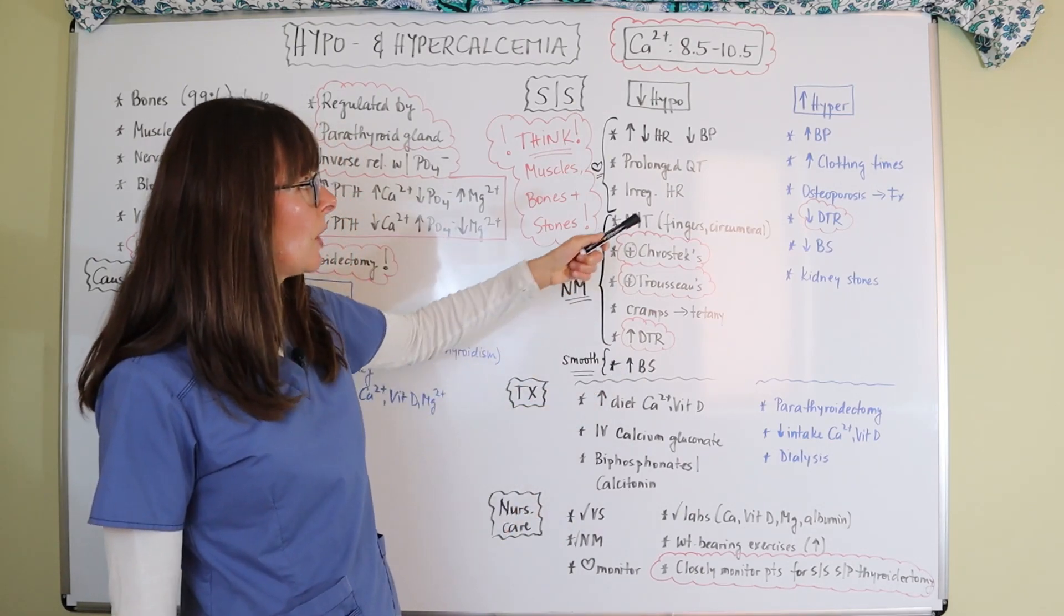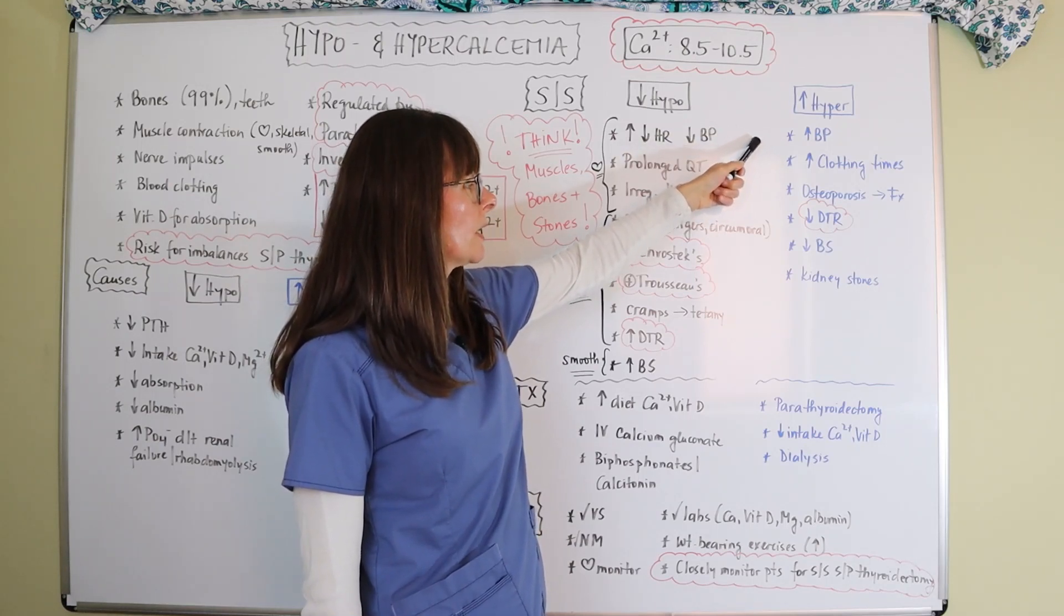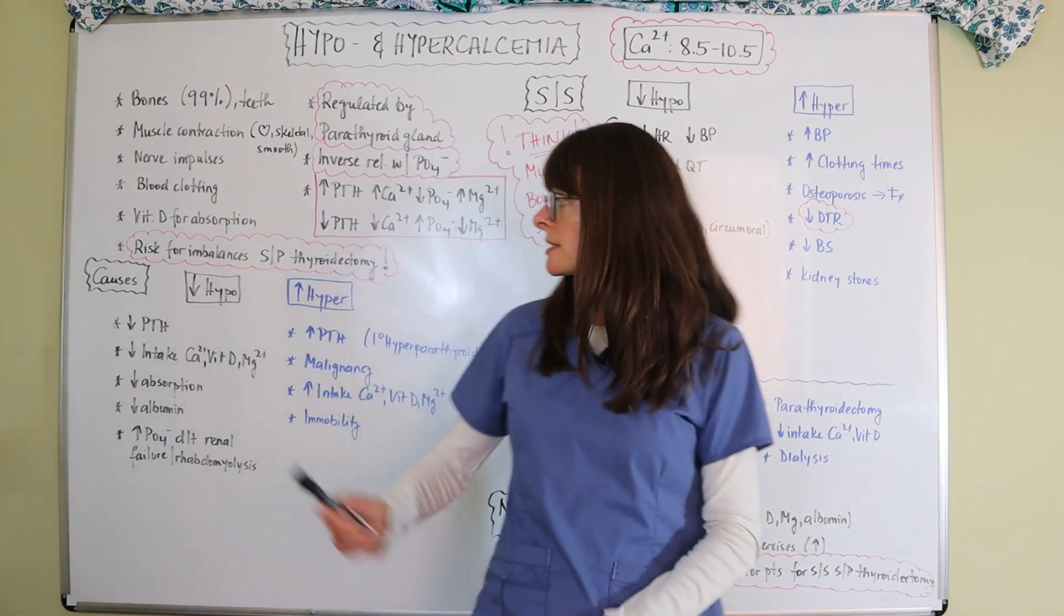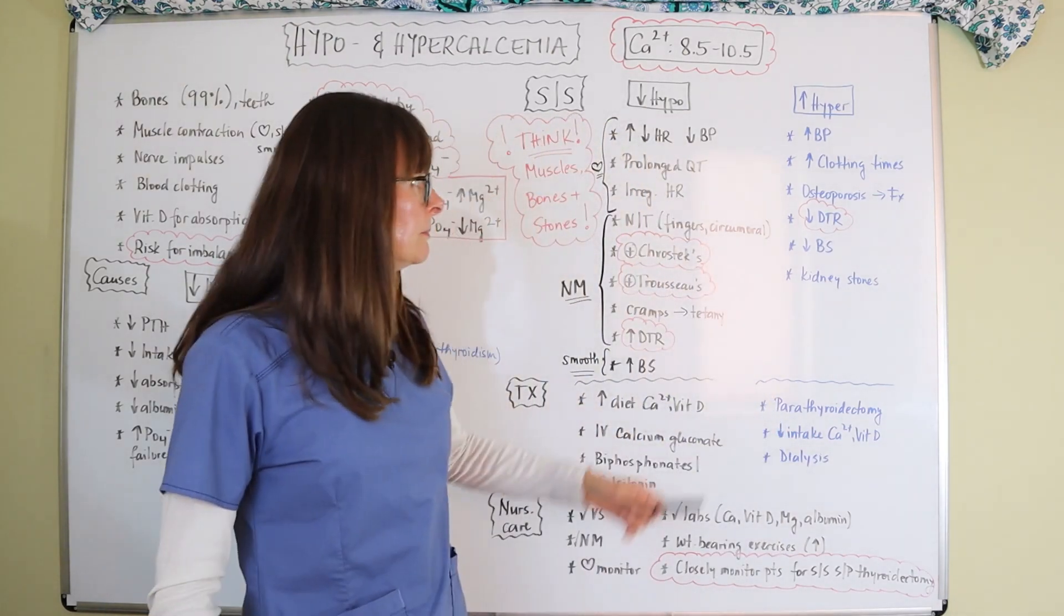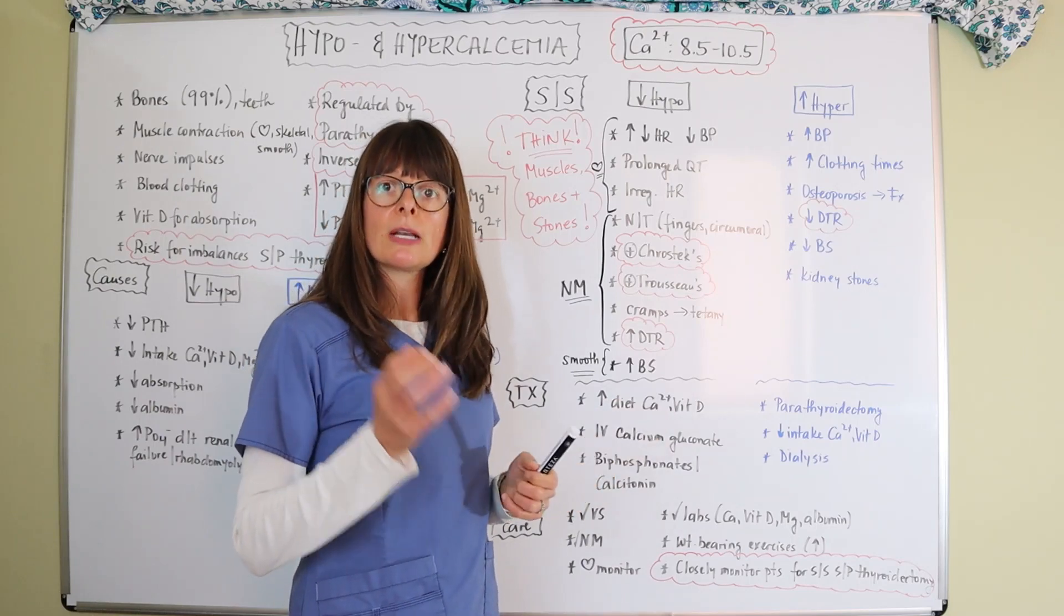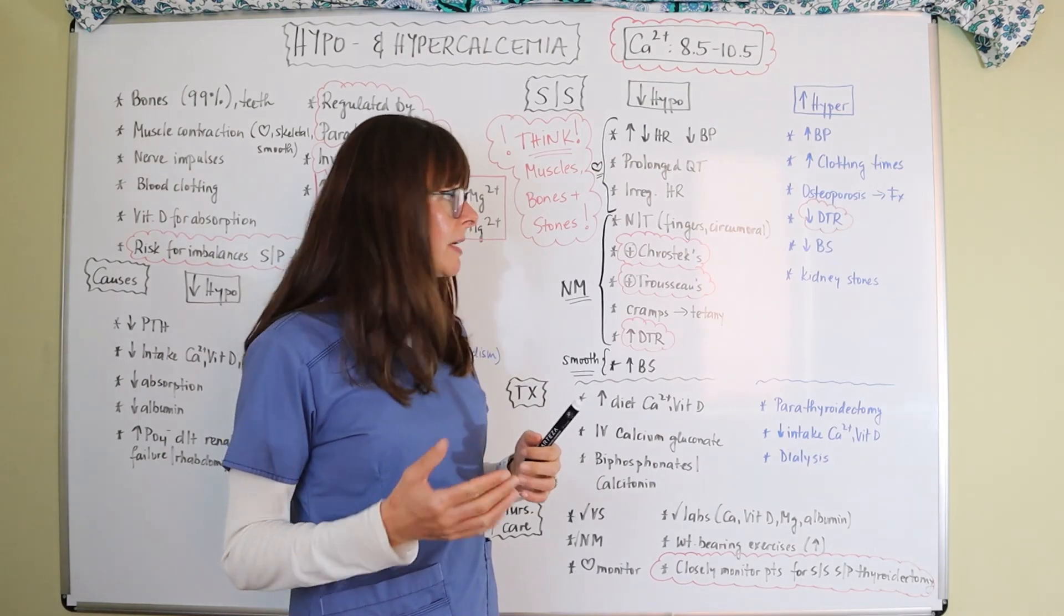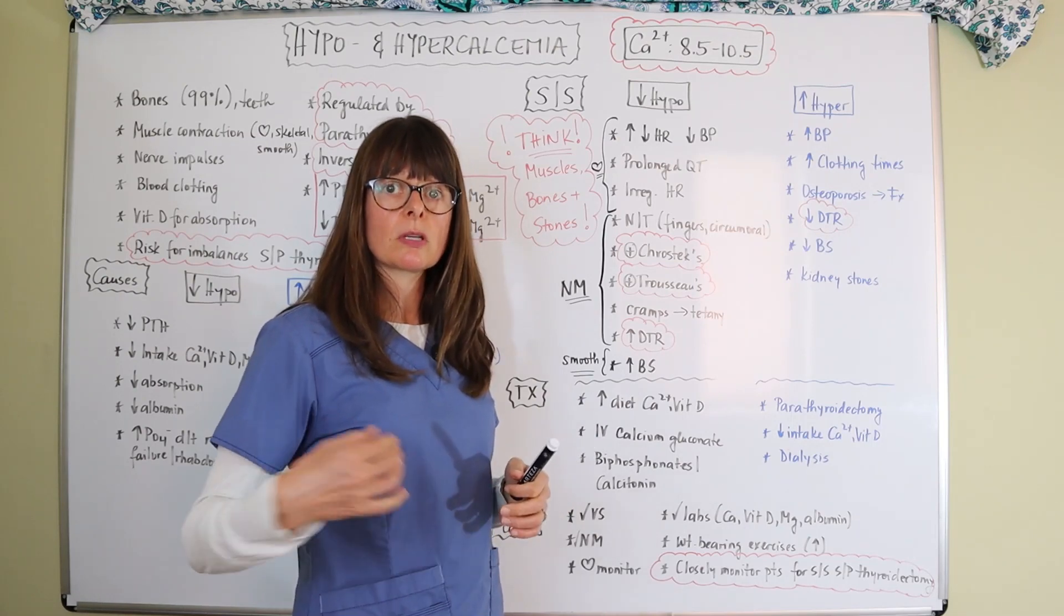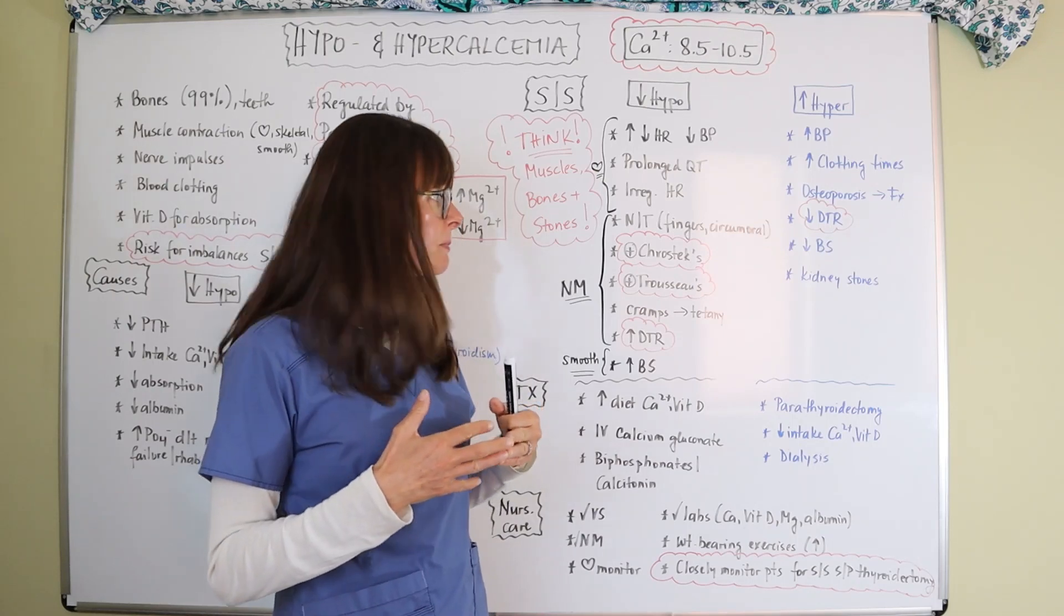On the other side over here for hypercalcemia, so increased level of calcium, we can have hypertension. It can also increase clotting times because we said over here that calcium is partially responsible also for blood clotting. It can also lead to osteoporosis because when the calcium is released from the bones and then is measured in the bloodstream as hypercalcemia, the bones lack that calcium and it can lead to osteoporosis all the way to fractures because the bone structure has been altered.